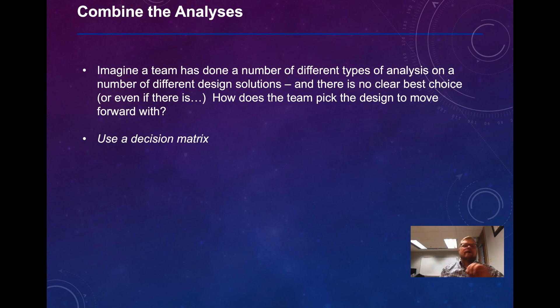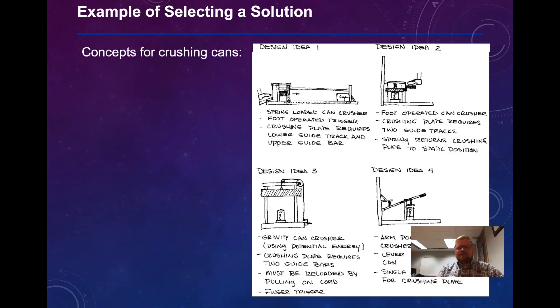So let's imagine a team has done a number of different types of analysis on a bunch of different design solutions, and there's no clear best choice. Or even if there is, how does the team pick the design to move forward with? The answer we're going to use is a decision matrix. So let's look at an example of selecting a solution. And this concept is for crushing cans.